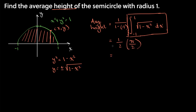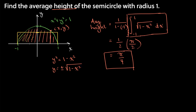Multiplying these together, we find our average height of this semicircle with radius 1 with respect to x is going to be π over 4. One way to interpret this: π over 4 is roughly 0.7. We can make a rectangle here — if we make a rectangle with its height being π over 4 and the length of our base is 2, multiply those together and you get exactly the area of our semicircle.